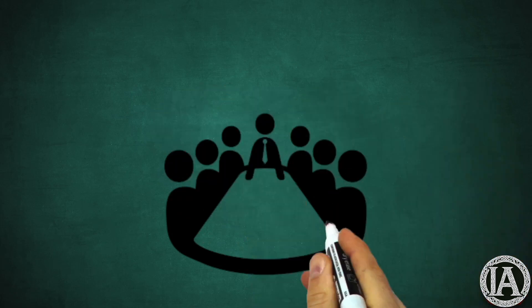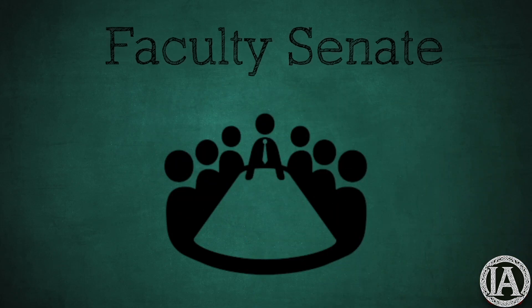The last facet of the organizational structures of colleges and universities we will cover in this video is the faculty senate. The level of authority of the faculty varies from one institution to the next. Typically the faculty is charged with the responsibility of delivering the curricular content for classes and conducting research.